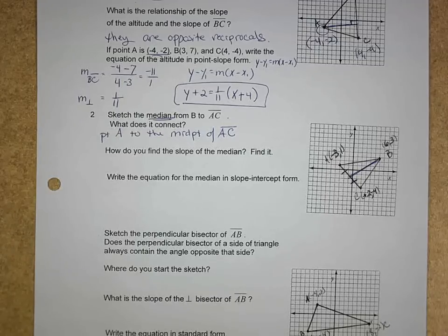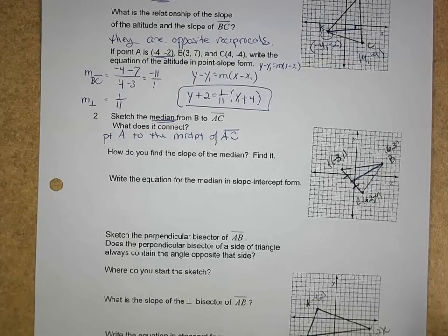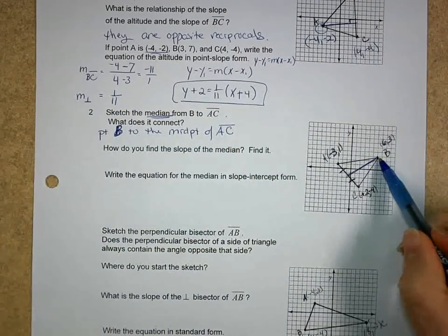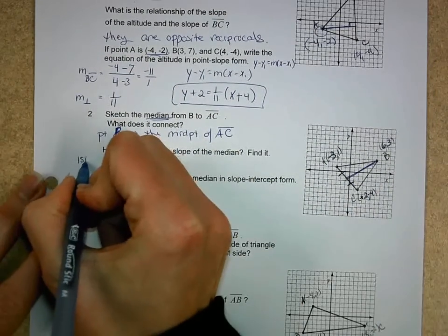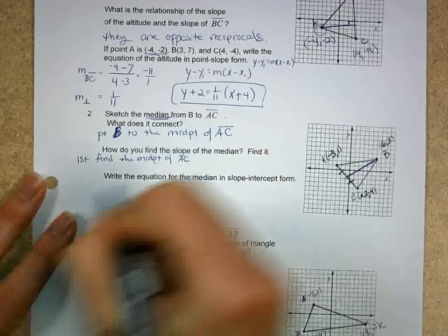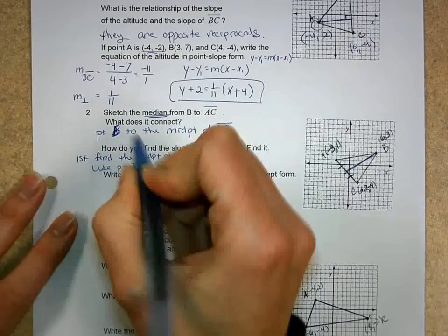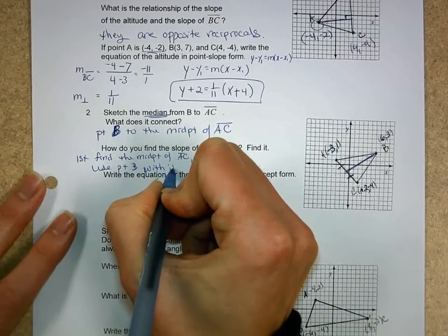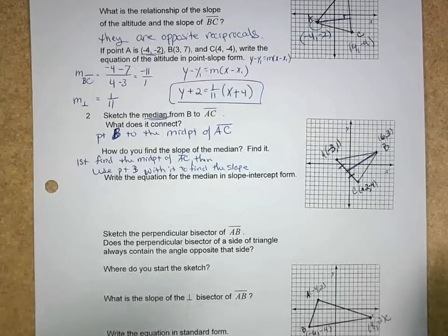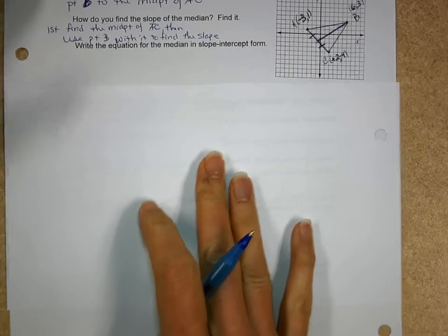It says, how do you find the slope of a median? How am I going to find the slope of this median? What am I going to use? I should have said point B here earlier. Hopefully you guys caught that. I'm going to use point B and the midpoint. First, find the midpoint of segment AC, then use point B with it to find the slope. I'm actually going to do this on the other side or a different side of a piece of paper just for room.